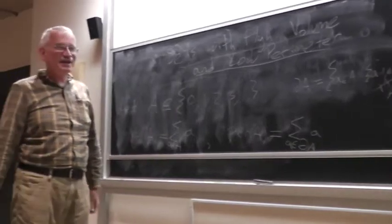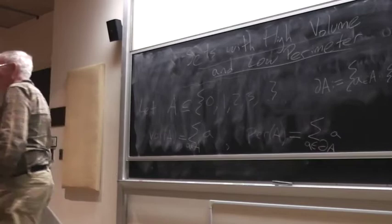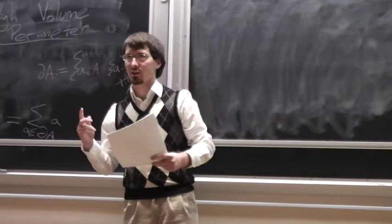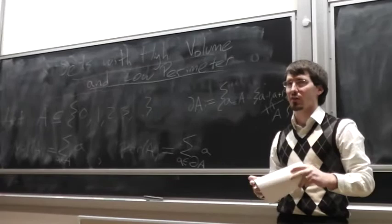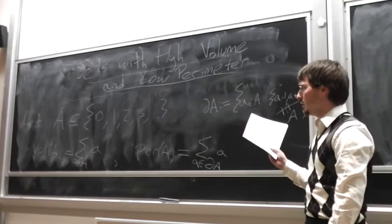The speaker will discuss the isoperimetric problem on integers. This talk is about sets with high volume and low perimeter, whatever that means. It's based on a paper written with the same name, so if you want to know more about this, there's a paper you can read or talk to me afterwards.